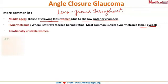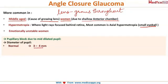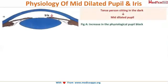Before we proceed further, let's learn about pupillary block. To understand it, we need to know that the diameter of the pupil normally is 3 to 4 millimeters. When it is fully dilated it is 9 to 10 millimeters. In mid-dilated condition it is about 6 to 8 millimeters.